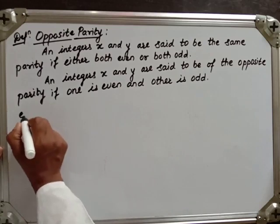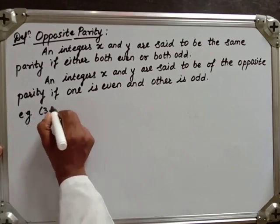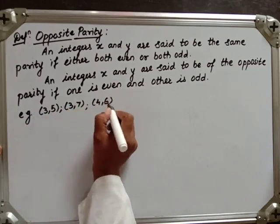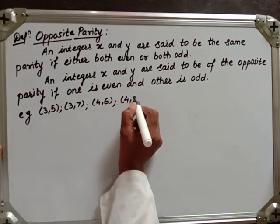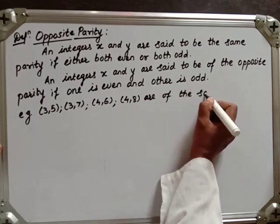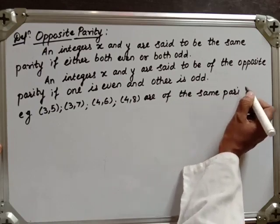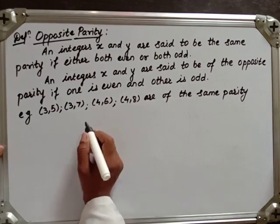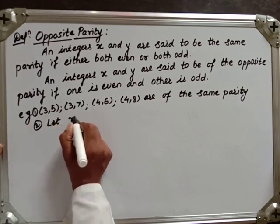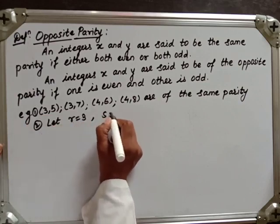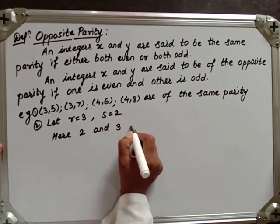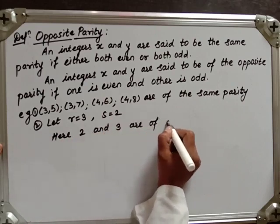For example, 3 and 5, 3 and 7 are of the same parity, as are 4 and 6, and 4 and 8 — they are of the same parity since they are either both even or both odd. Now let r equal 3 and s equal 2. Here, 2 and 3 are of opposite parity.